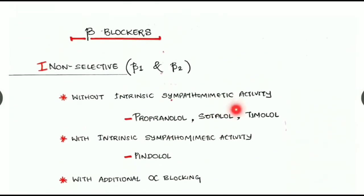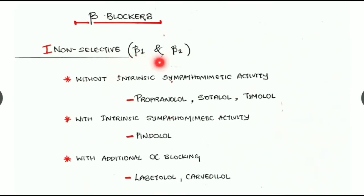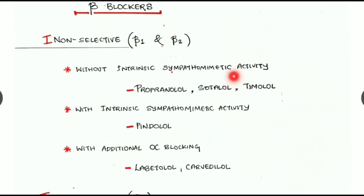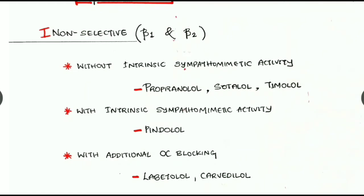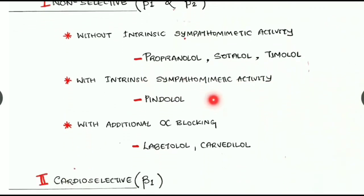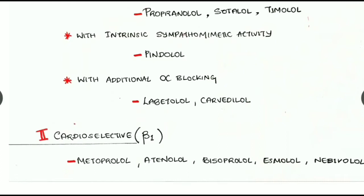Next, beta blockers — classification. The first group is non-selective, blocking both beta-1 and beta-2 receptors. These are subdivided into those without intrinsic sympathomimetic activity — examples are propranolol, sotalol, and timolol — those with intrinsic sympathomimetic activity, example pindolol, and those with additional alpha blocking activity — examples are labetalol and carvedilol.